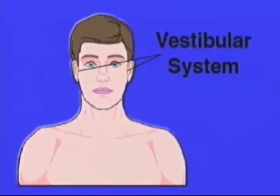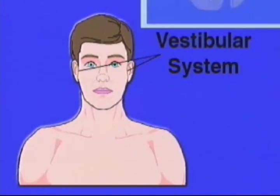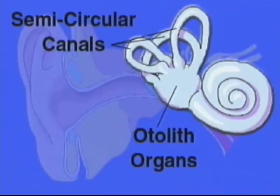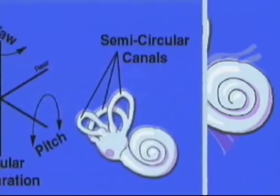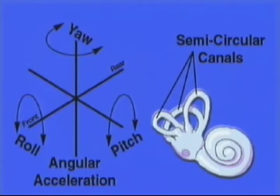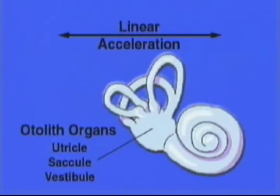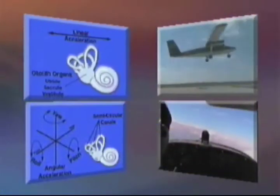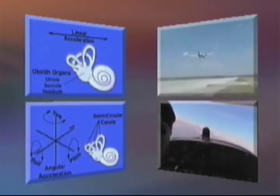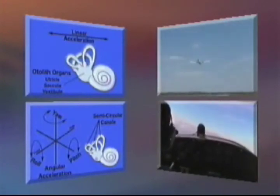The vestibular system is located in the inner ear. This system is the size of a pencil eraser and contains two distinct structures: the semicircular canals and the otolith organs. The semicircular canals detect changes in angular acceleration, while the otolith organs detect changes in linear acceleration. Both provide information regarding your body's position and movement relative to Earth.